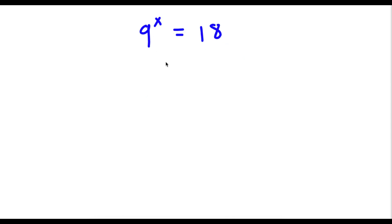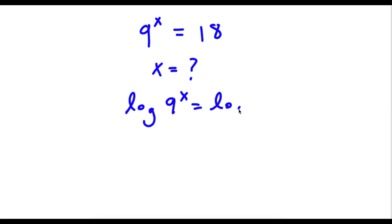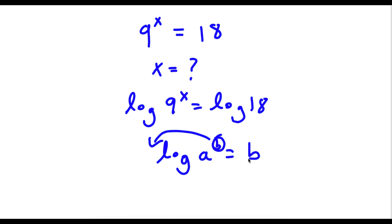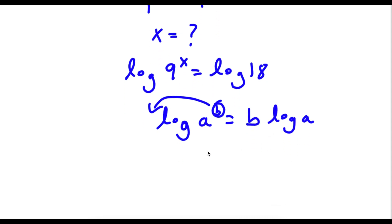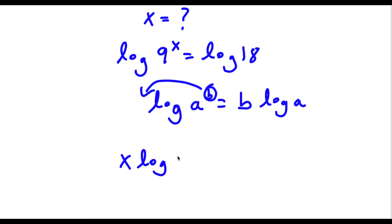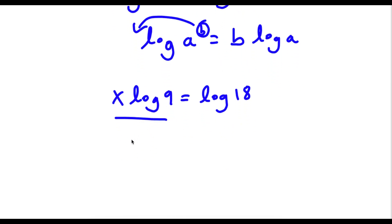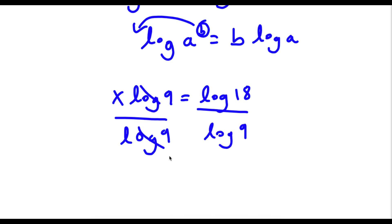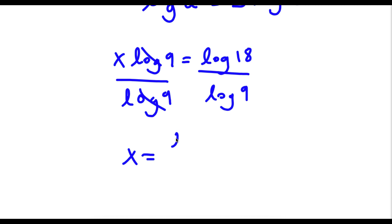So I have 9 to the power of x is equal to 18, and I want to find the value of x. So the first thing I'm going to do is take the log on both sides. So now I have log 9 to the power of x is equal to log 18. Using the log power rule, I can move x to the front, so x times log 9 is equal to log 18. Now I'm going to divide both sides by log 9, so these two cancel out and I'm left with x equals log 18 over log 9.